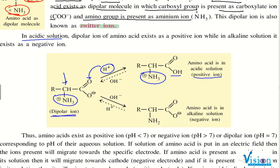In acidic medium it becomes a positively charged ion. And if you then add OH⁻ ion to this positive ion, that H+ which was absorbed is combined with OH⁻ and H2O is gone. Again, you get your dipolar zwitterion back. That was the zwitterion behavior in acidic medium.